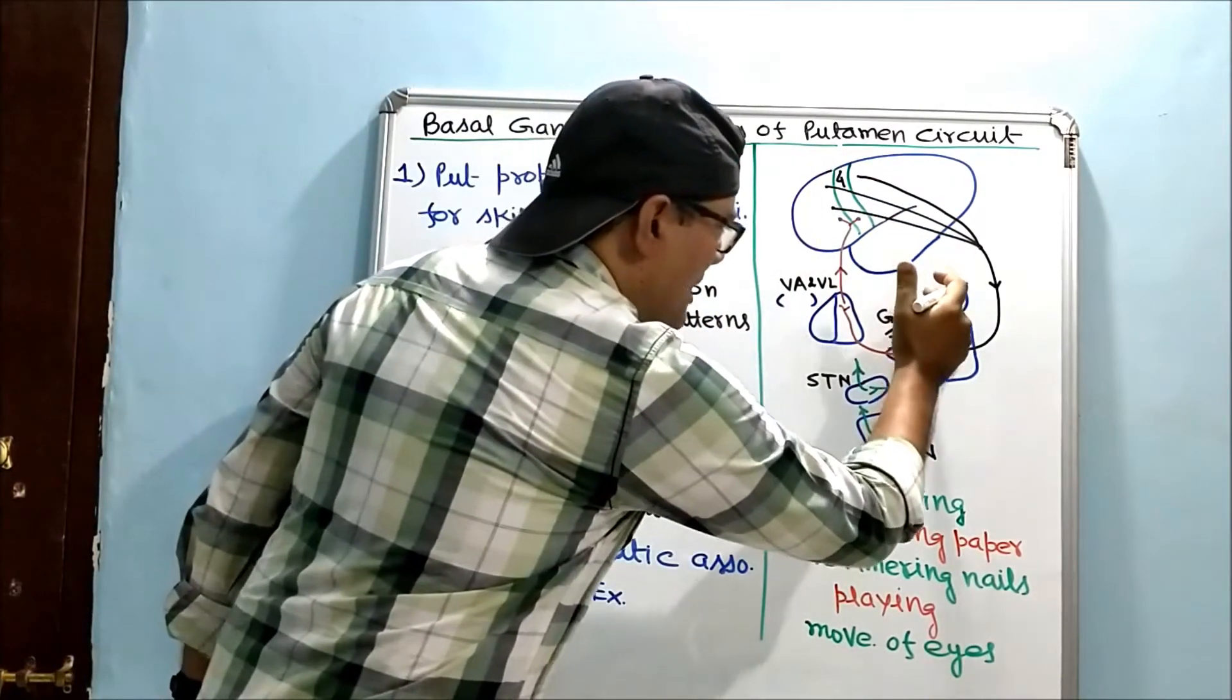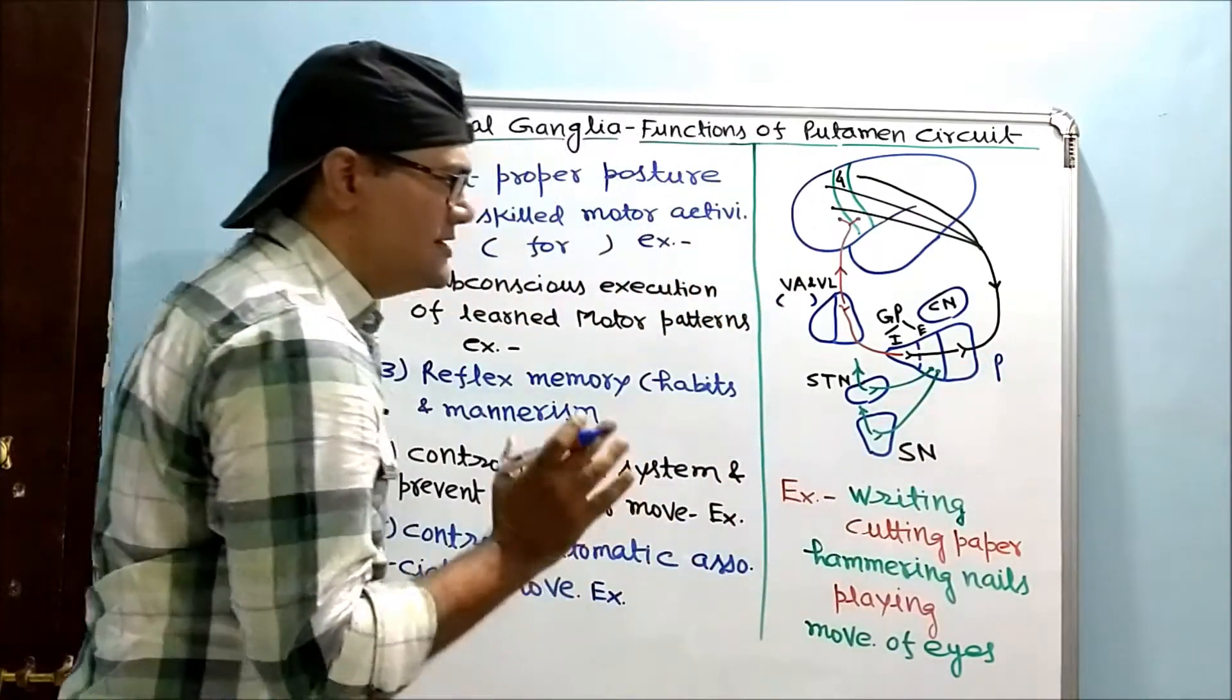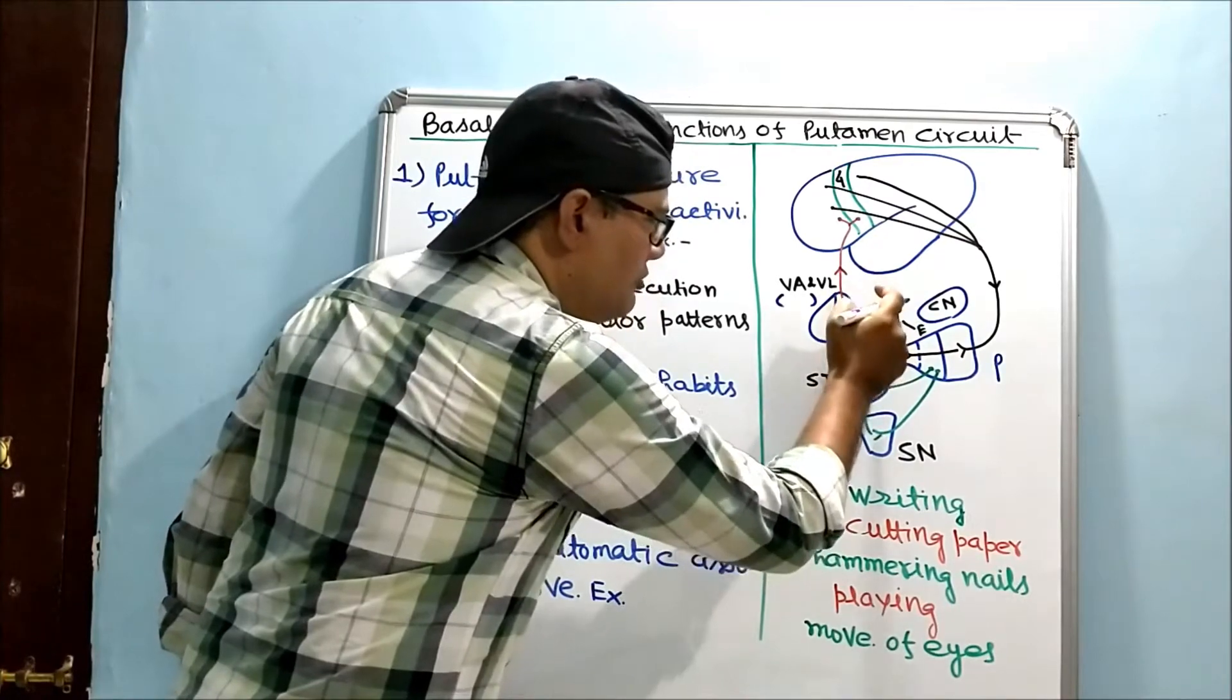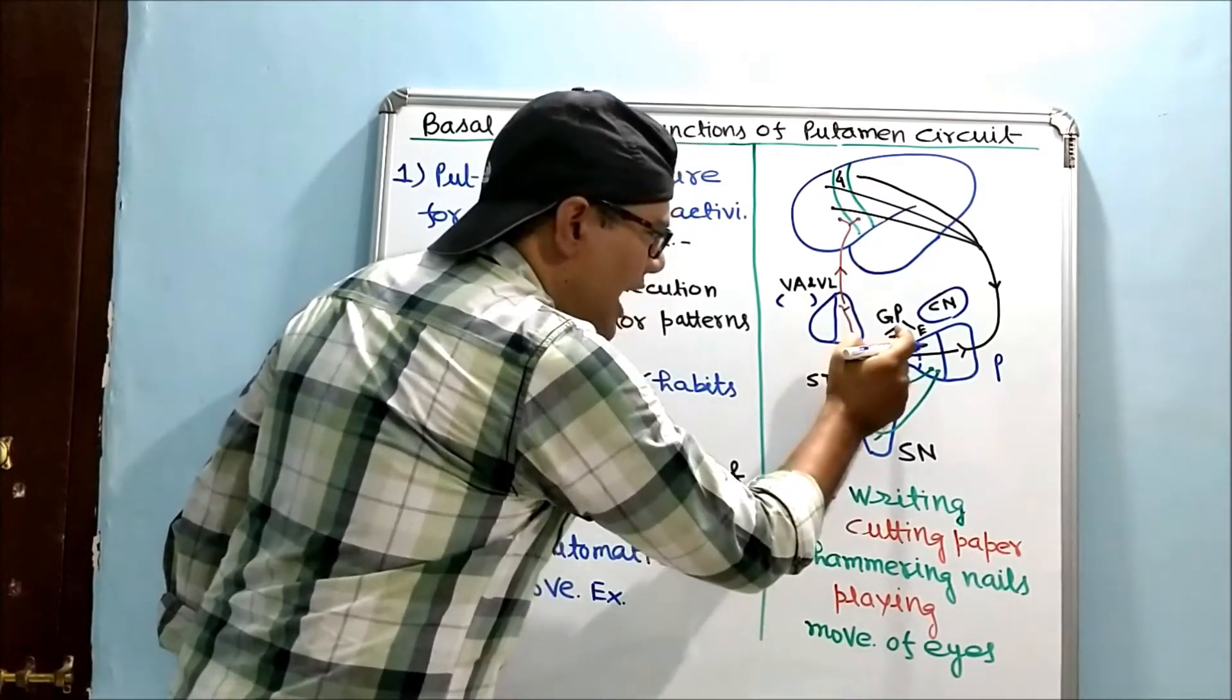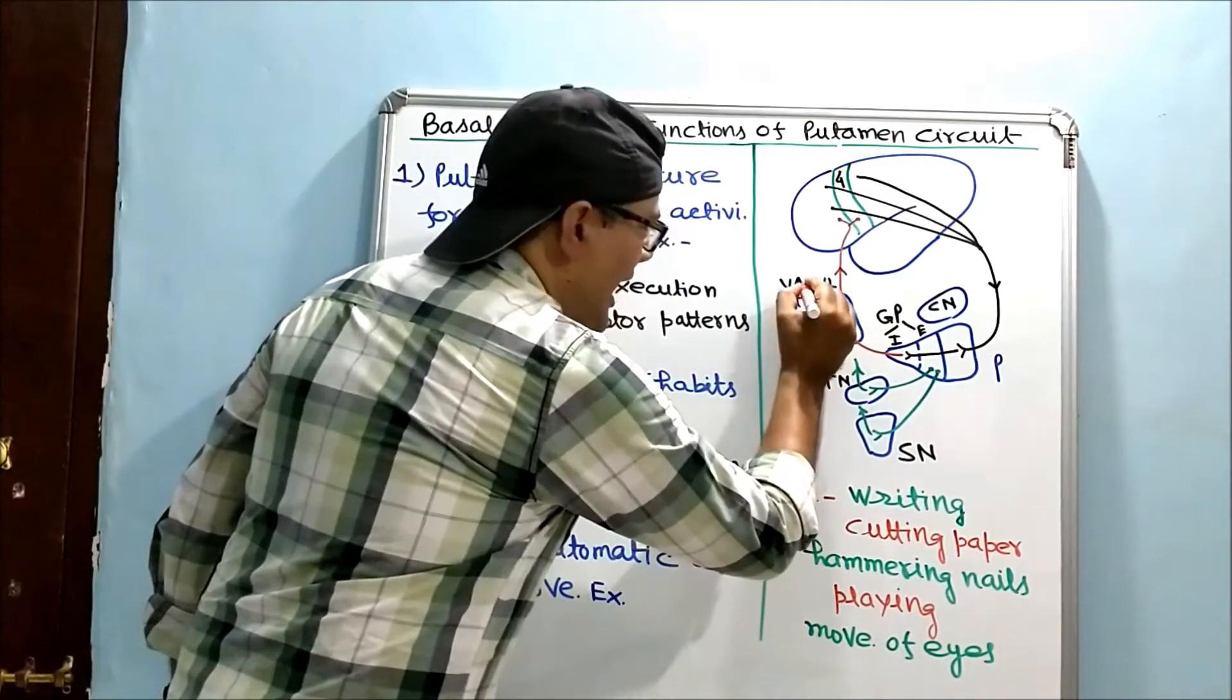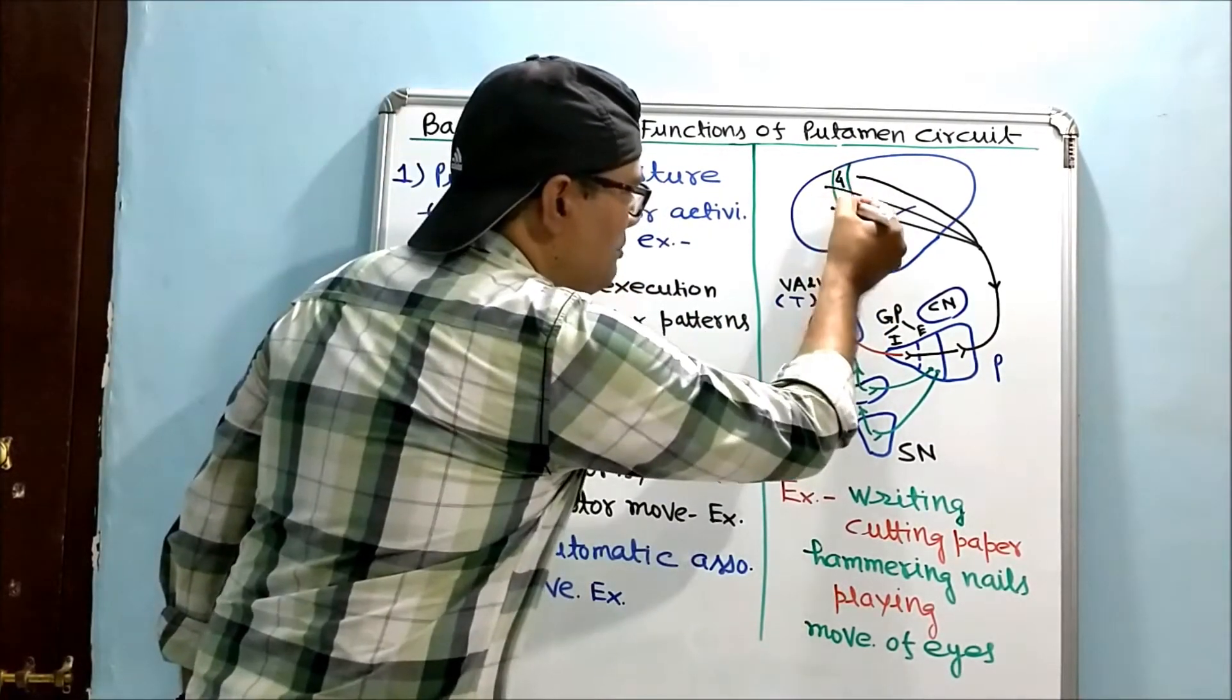These fibers bypass coordinate nucleus and relay at putamen nucleus of basal ganglia, from here to internal part of globus pallidus, and then output fibers via ventral anterior and ventral lateral nucleus of thalamus to area number four.